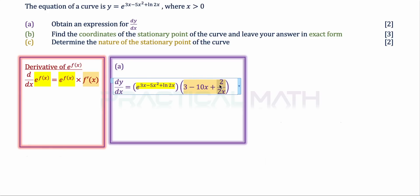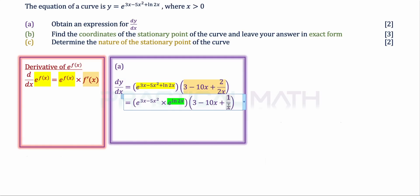Differentiating ln 2x gives 2 over 2x. This 2 over 2x can be further simplified in the next step into 1 over x. Within the first bracket, we can actually split up the e to the power of ln 2x, because there is a formula we can use to simplify this part.